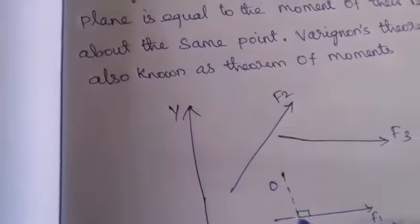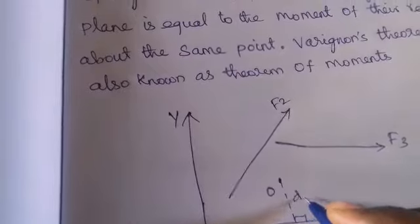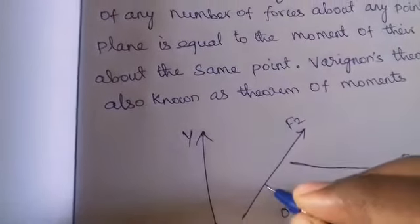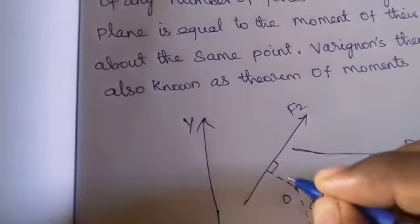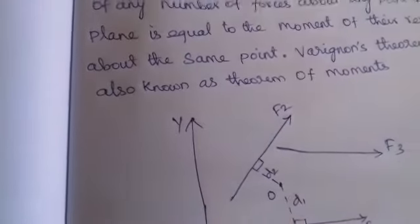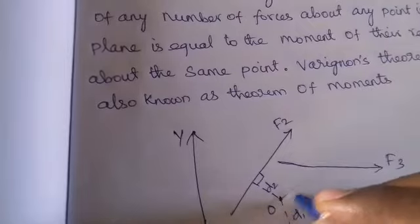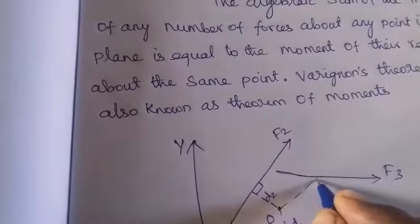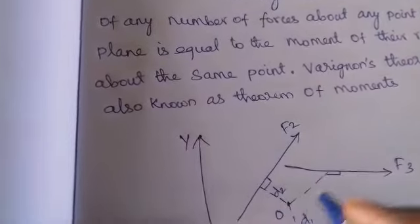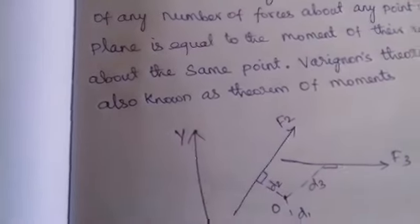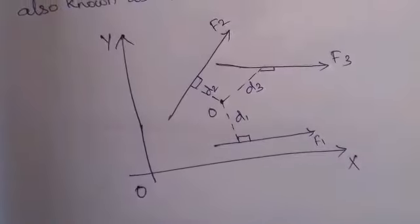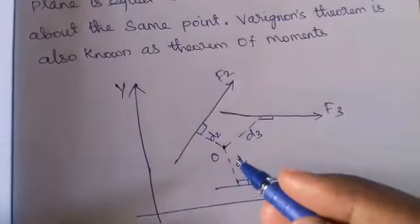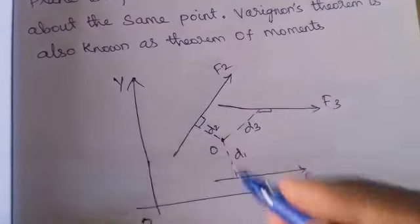From point O, the perpendicular distances to each force are: D1 for F1, D2 for F2, and D3 for F3.